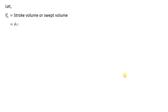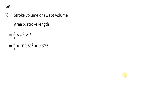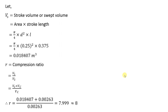Vs is the stroke volume, which equals the piston area times stroke length: (π/4)D²·L. Substituting the values of D and L gives a stroke volume of 0.018407 cubic meters. The compression ratio is V1/V2, which equals (Vs + Vc)/Vc. Substituting Vs = 0.018407 and Vc = 0.00263 gives a compression ratio of 7.999, approximately 8.